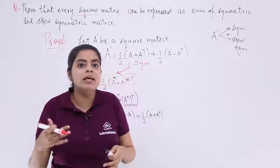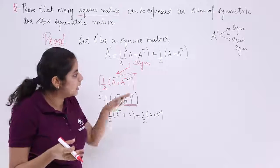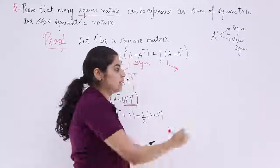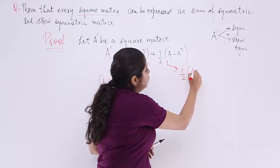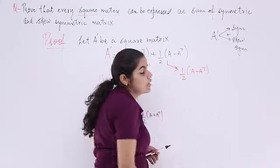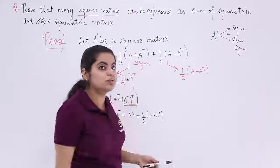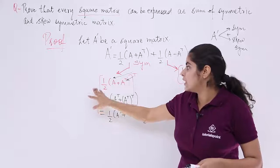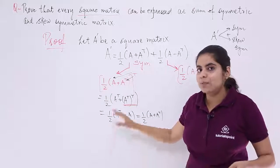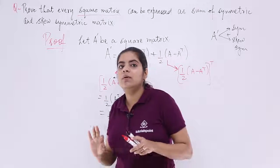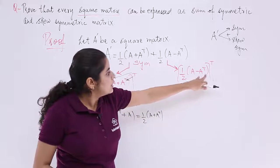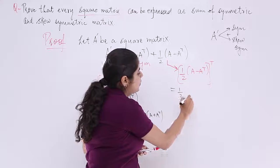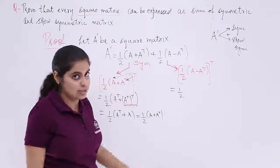It is skew symmetric if Aᵀ = −A. Let's check. Taking the second factor — half into (A − Aᵀ) — and taking the whole transpose, we shift the transpose inside. Half comes outside as a constant, and the transpose is applied to each term.